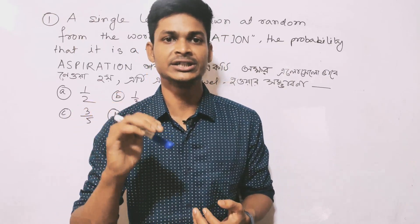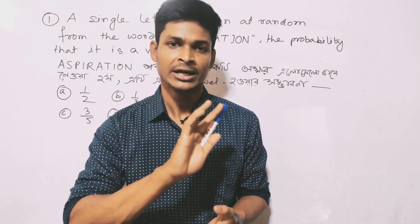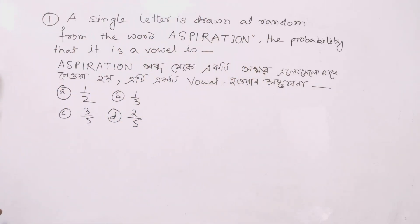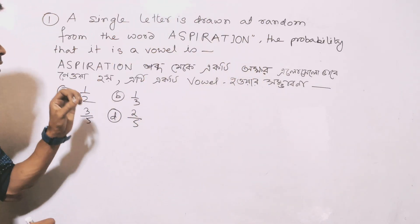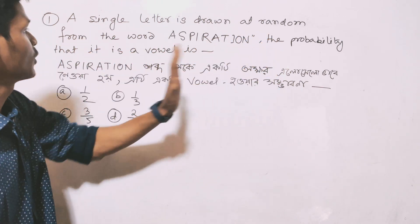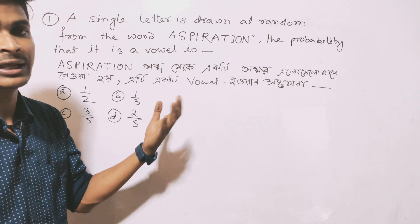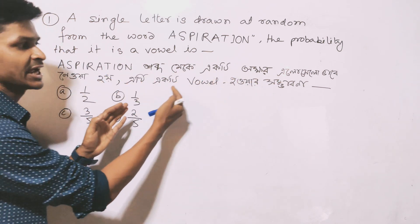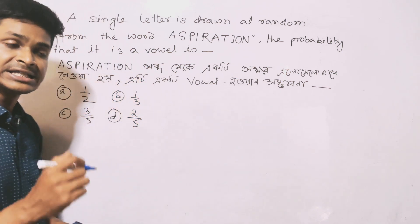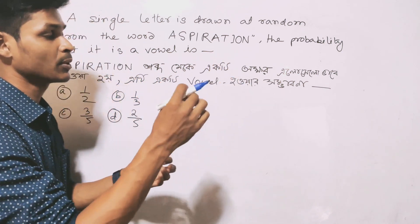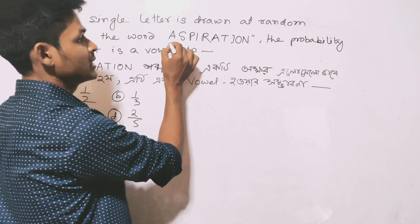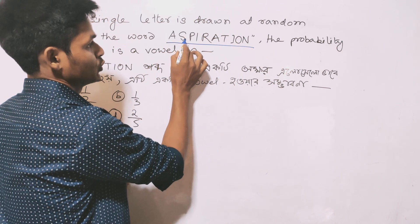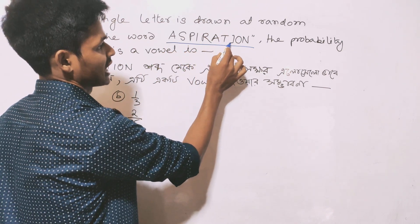The first question: a single letter is drawn at random from the word ASPIRATION. The probability that it is a vowel is — ASPIRATION has 10 letters total: 1, 2, 3, 4, 5, 6, 7, 8, 9, 10.